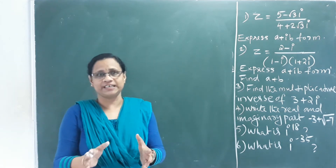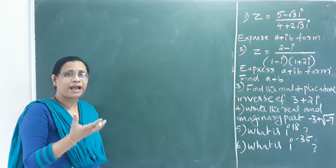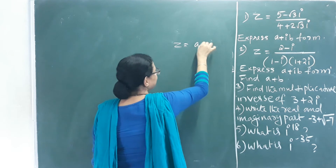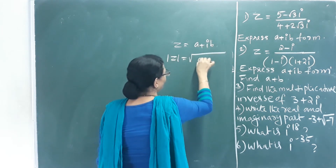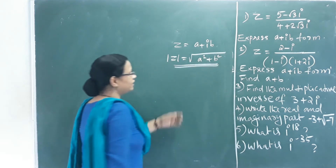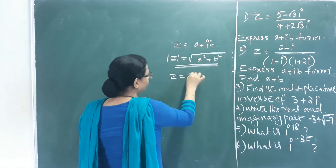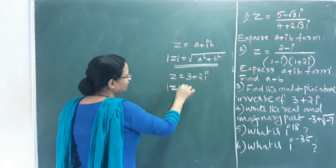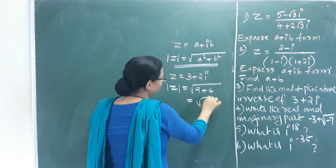The next topic is the modulus of a complex number. For z = a + ib, the modulus is |z| = √(a² + b²). This represents the magnitude of the complex number.